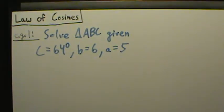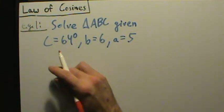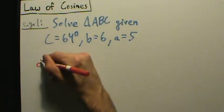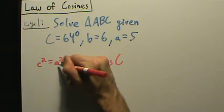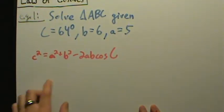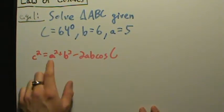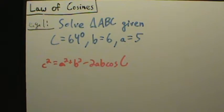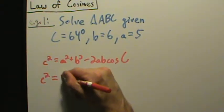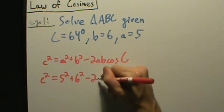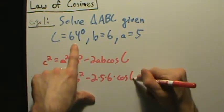Now what we're going to do is find little c. Remember there are three equations for the law of cosines, and the only one that's going to work for us in this first step is c² = a² + b² − 2ab·cos(C). The other two involve cosine of B and cosine of A, but we don't have angle B or angle A — we do have angle C, little a, and little b. So: c² = 5² + 6² − 2(5)(6)·cos(64°).